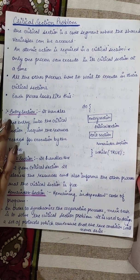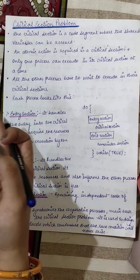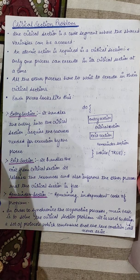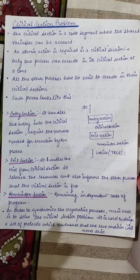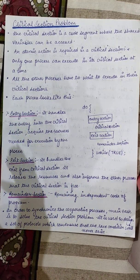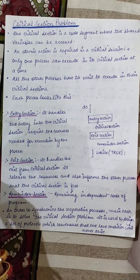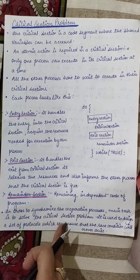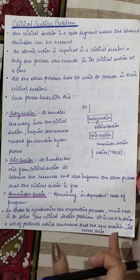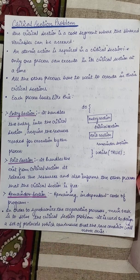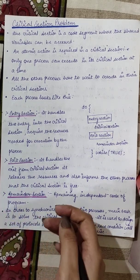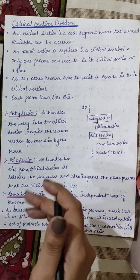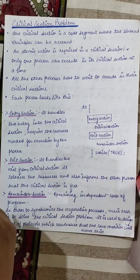In order to synchronize cooperative processes — processes which affect each other and themselves — the main task is to solve the critical section problem. It is used to design a set of protocols which ensure that race conditions will never arise. The main problem in concurrency is ensuring that when processes access critical resources, there will be no data conflicts or race conditions.